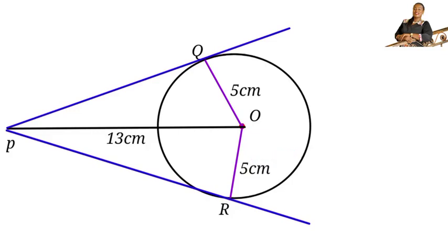So here we are to calculate the length PQ and also the length PR. In order to know the method we're going to use, if we take note of this place, you see that you have this radius touching Q at this point.